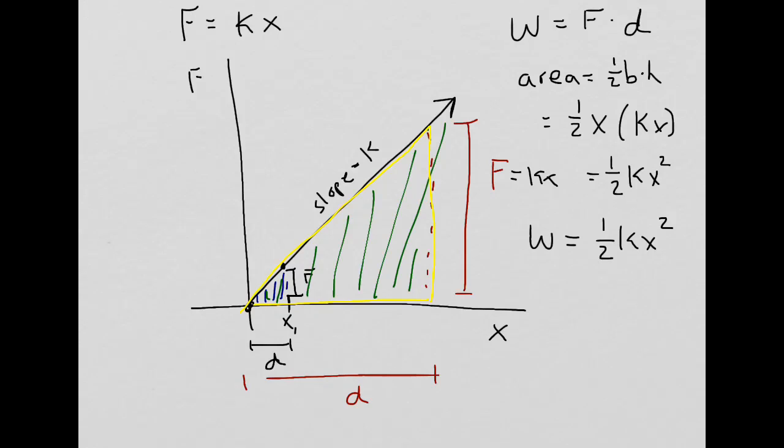Now, in the last video, we learned about conservation of energy. And we know that if we apply or do some work on an object, that actually equals the potential energy of that object. So the potential energy of the spring, PE of spring, is equal to one half kx squared.